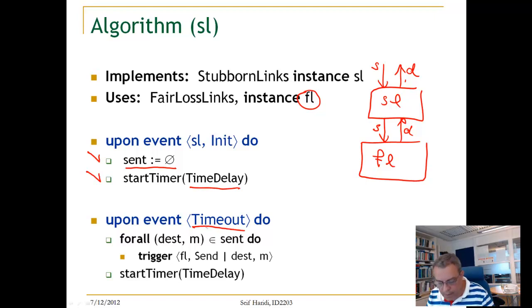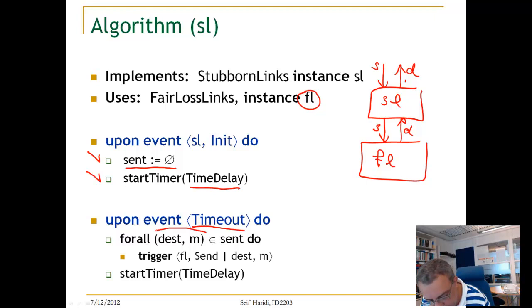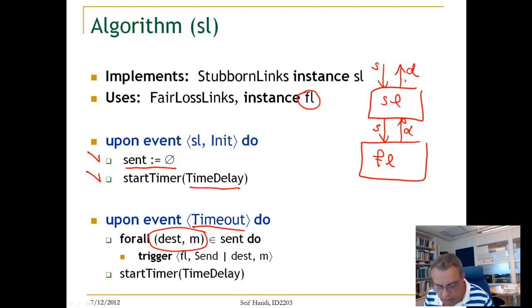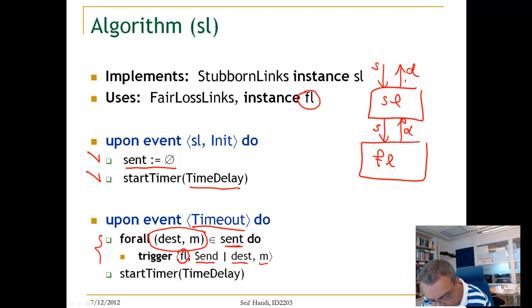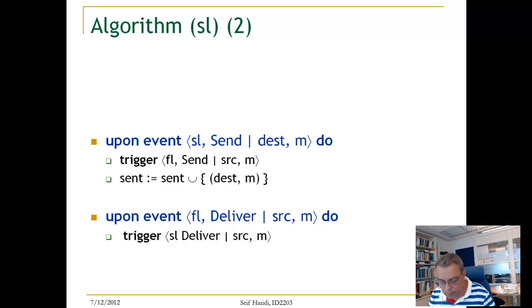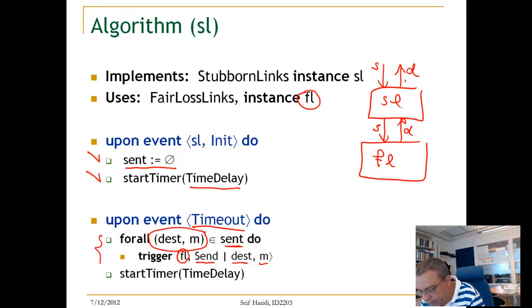Whenever we send a message, we store in the buffer the pair: the destination of the message and the message sent. When we get a timeout event, we resend all the messages that are in the send buffer — for all messages in the send buffer we trigger a send of M to the destination, which goes to the fair loss link — and then we restart the timer again. We can also receive a delivery from the fair loss link.